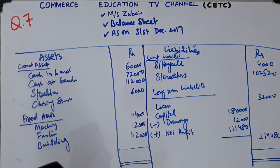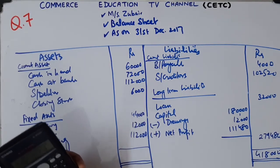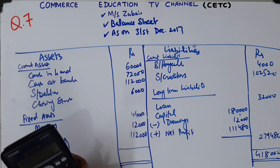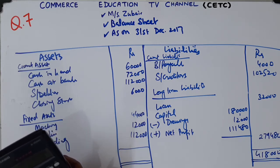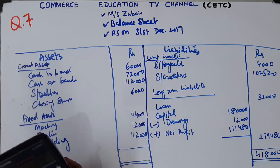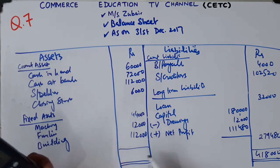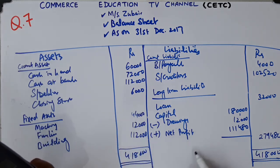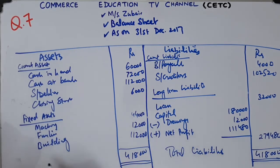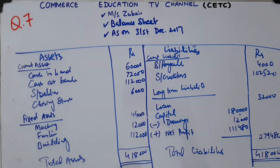The total comes to 4,11,800. Now we check both sides — assets: 60,000 plus 72,000 plus 1,12,000 and so on. Total liabilities and total assets both match. The question is now complete. If you have not understood anything, you can ask me. Thank you very much.